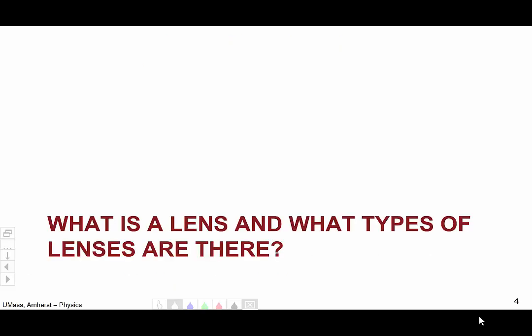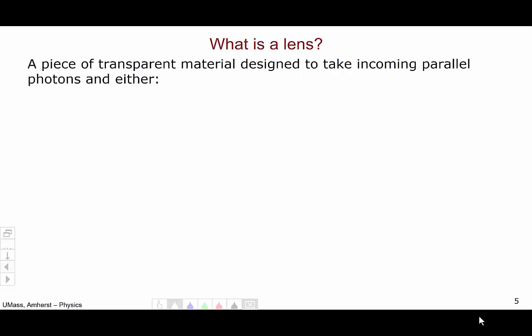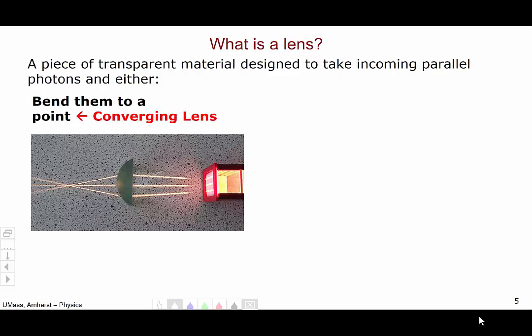So let's get started with the fundamental question of, what is a lens, and what types of lenses are there? A lens is a piece of transparent material designed to take incoming parallel photons and either bend them to a point, which we call a converging lens, which looks something like this, where you have incoming parallel light rays, incoming parallel photons from the right, passing into the lens and converging to a point on the left.